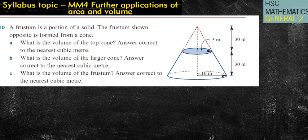It looks a bit more complicated. We've got a couple of cones going on here. We've got a big cone and a small cone. And it says here that a frustum is a portion of a solid. The frustum shown opposite is formed from a cone. So the frustum is kind of this shape going on here, and it doesn't really have that top part there. So this is split into three sections, which you could probably do in one. Part A says, what is the volume of the top cone?